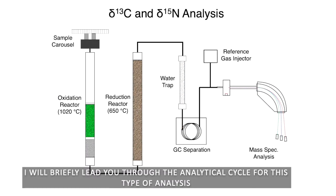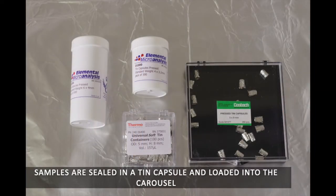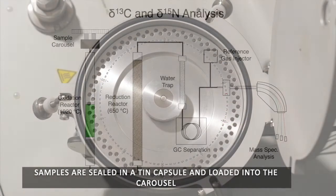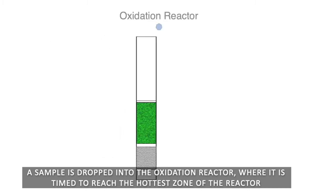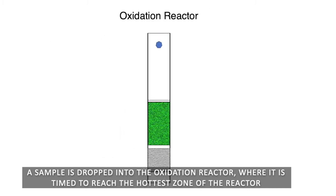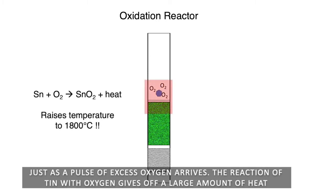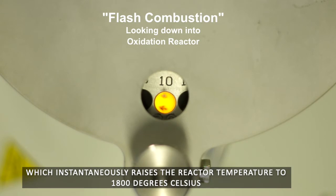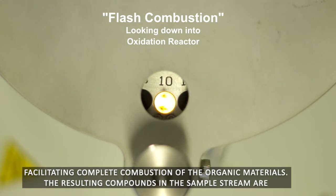I will briefly lead you through the analytical cycle for this type of analysis. Samples are sealed in a tin capsule and loaded into the carousel. A sample is dropped into the oxidation reactor, where it is timed to reach the hottest zone of the reactor just as a pulse of excess oxygen arrives. The reaction of tin with oxygen gives off a large amount of heat, which instantaneously raises the reactor temperature to 1800 degrees Celsius, facilitating complete combustion of the organic materials.